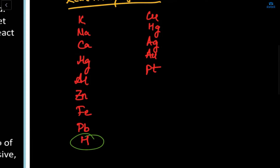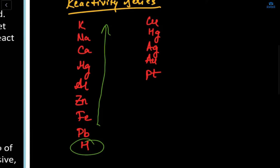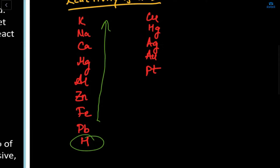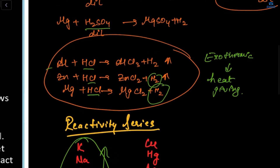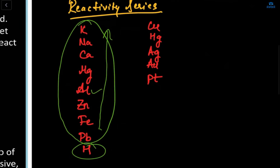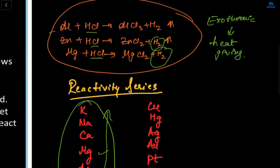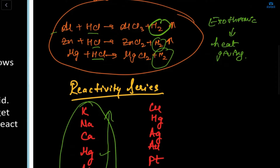After H in the series comes Cu, then platinum. Metals above H in the reactivity series liberate H₂ gas when they react with dilute mineral acid. So Al, Zn, and Mg are above hydrogen and therefore liberate H₂ gas when combined with any dilute mineral acid.